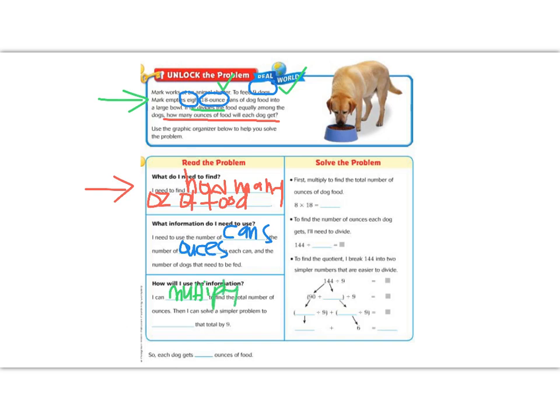And then we need to take that, and we need to split it up by how many dogs there are. So it says, then I can solve a simpler problem to divide by nine.